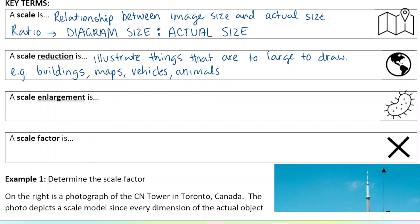A scale enlargement is when we use it to illustrate things that are too small to draw. For example, cells, right? Pictures of atoms you might see in your science textbook, very small living organisms, small animals like insects, bacteria, things like that.